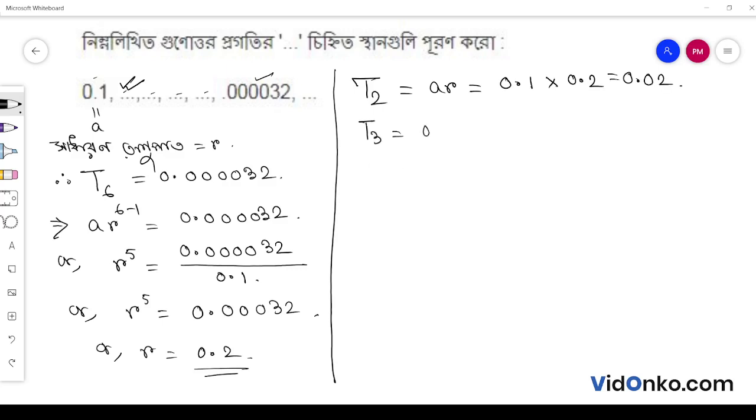Similarly, t3 equals ar square. The ar portion is 0.02 into r value 0.2, which is 0.004.